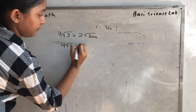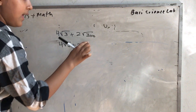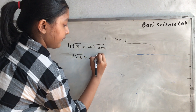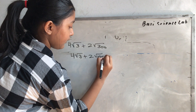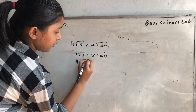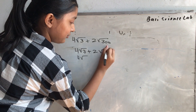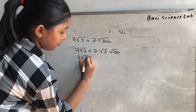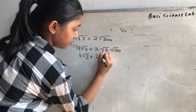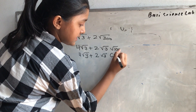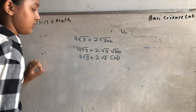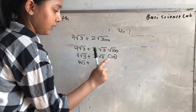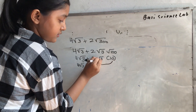4 root 3 plus 2. And then you have to put root 100 because 300 goes to 100 times. Then you have to do 4 root 3, then root 3 and then root 100, then root 3 plus 2, root 3 and then you have to do 10 in parentheses. Then you do 4 root 3 plus 20 because you have to multiply 10 times 2.